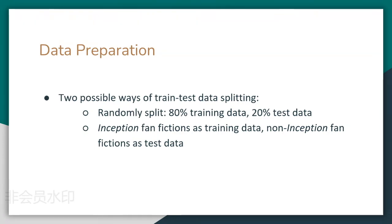We came up with two possible ways to split our data. The first one is to mix all the work for each author and use 80% of them as our training data and the remaining 20% as our test data. The other way is to use all the Inception fan fictions as our training data and the non-Inception fan fictions as our test data. This makes sense because we will have an adequate amount of training data, and combining both splitting approaches can help us tell whether the original themes of the work have an influence on our final performance.